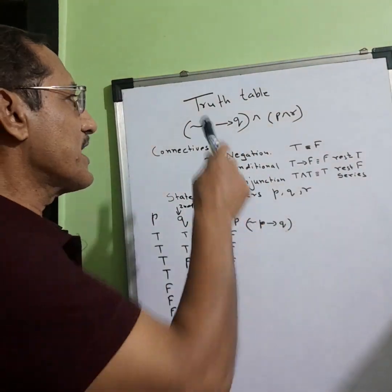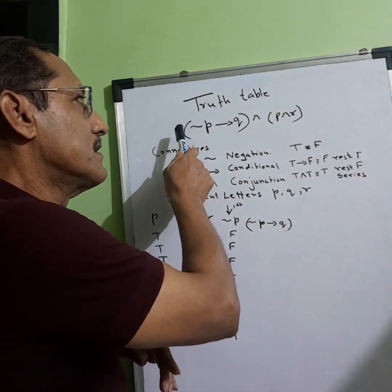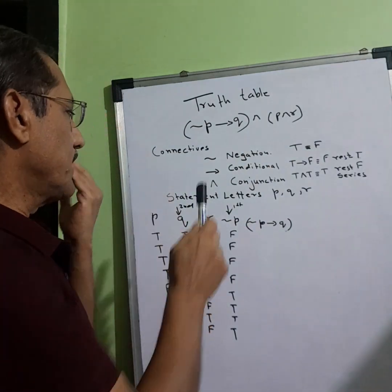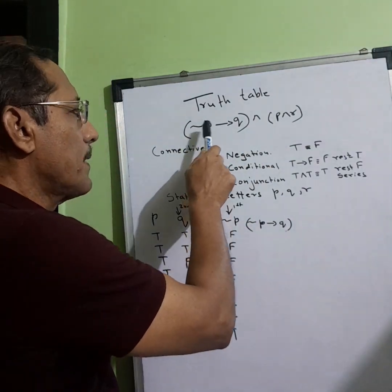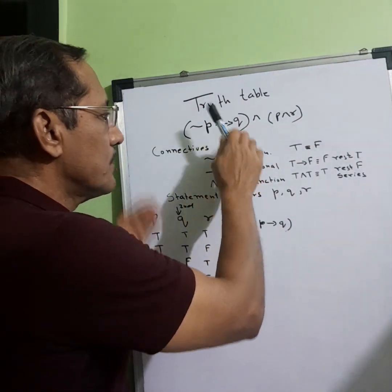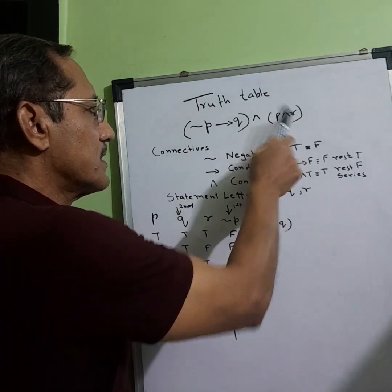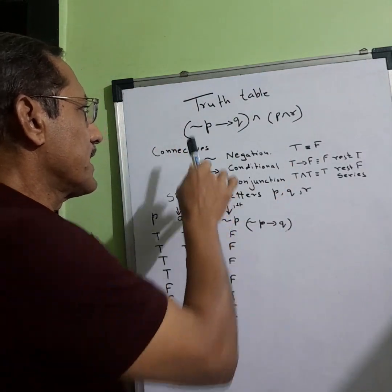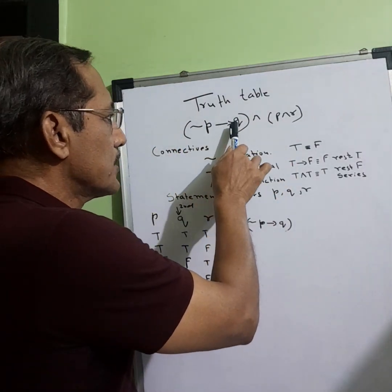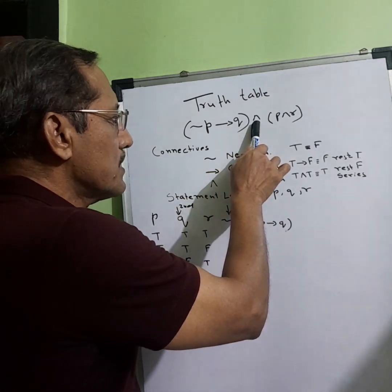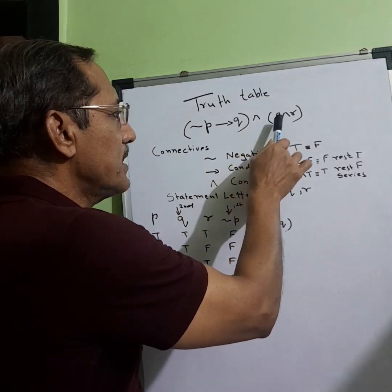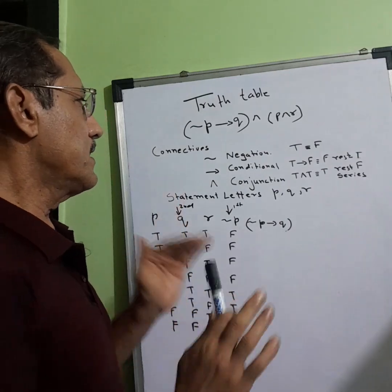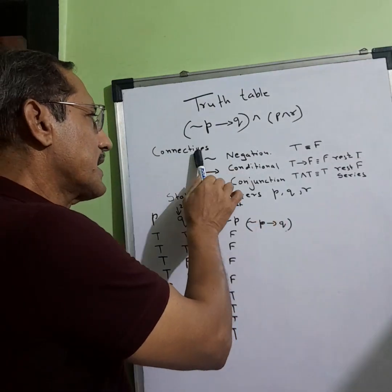Let's find the truth table for this statement. We have negation p conditional q, and p conjunction r. So we have to find the truth table for negation p conditional q, conjunction p conjunction r. The best approach is to jot down the connectives.